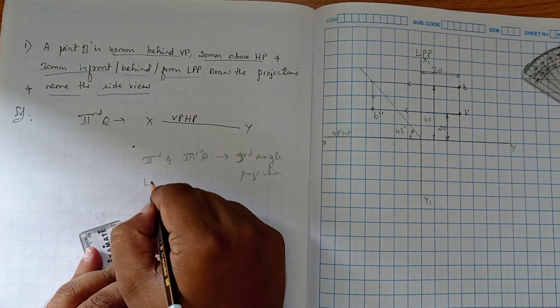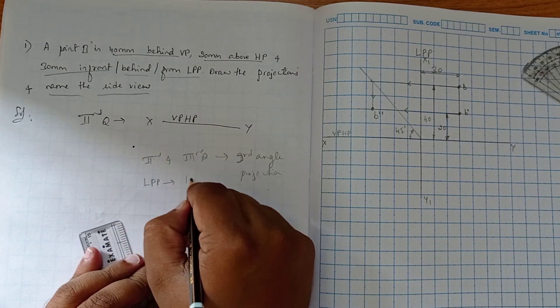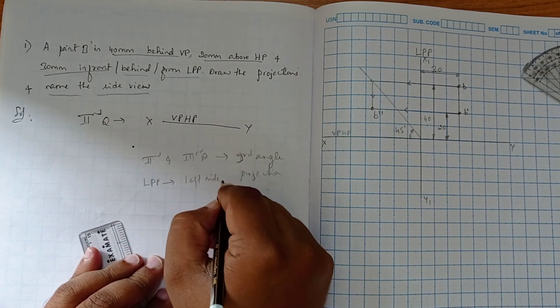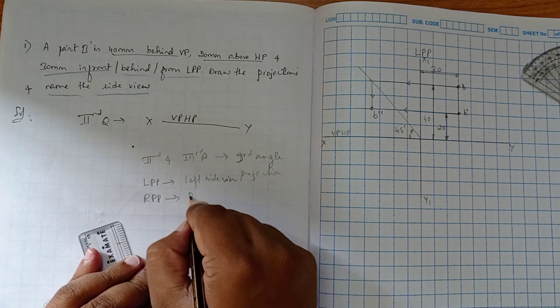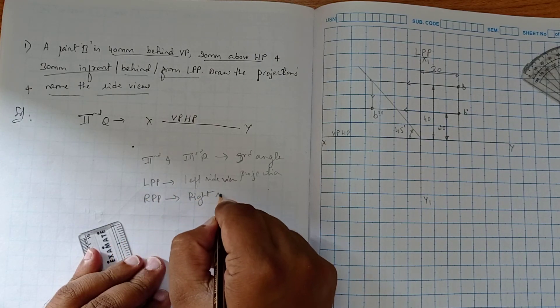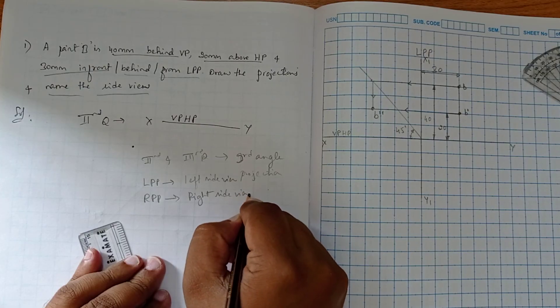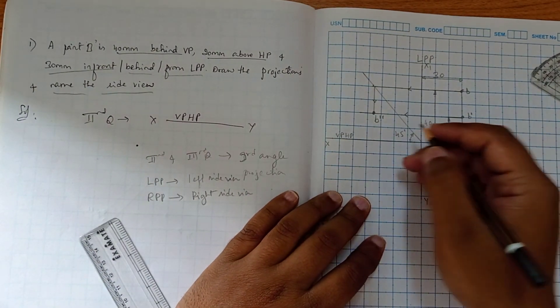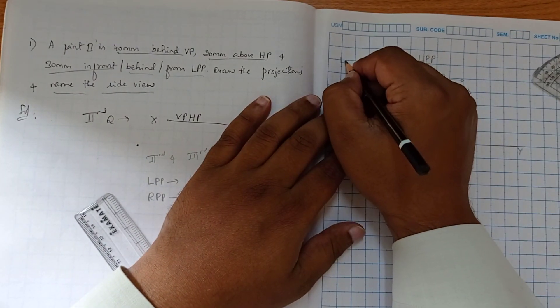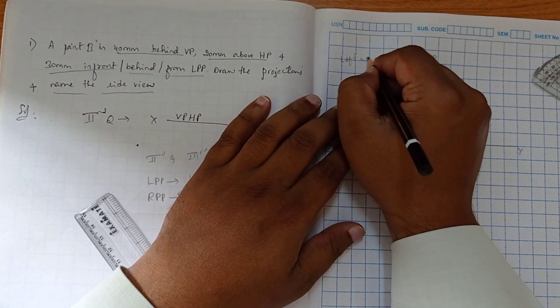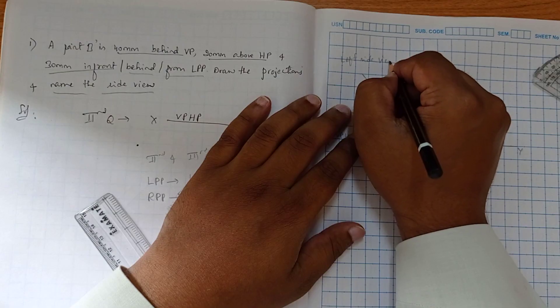So it comes in the third angle projection. In third angle projection, what happens? With respect to the LPP, we have left side view. With respect to the RPP we have right side view. So this is left side view.